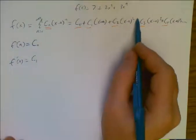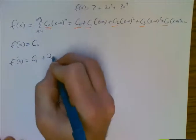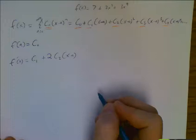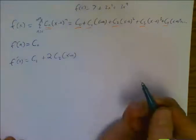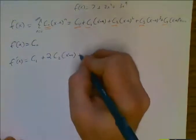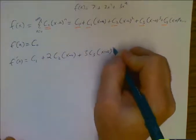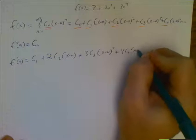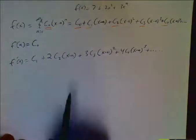This one, I have to do a power rule. So my power rule is going to be two times c two, x minus a to the first. With a chain rule kicker, that's just a one, so I'm not going to even bother writing that. Next, I have three c three, x minus a to the second, plus four c four, x minus a to the third, et cetera, and that would be my f prime of x.